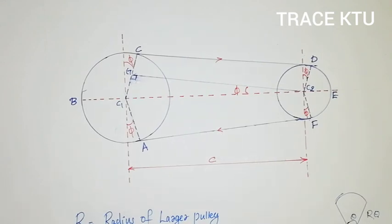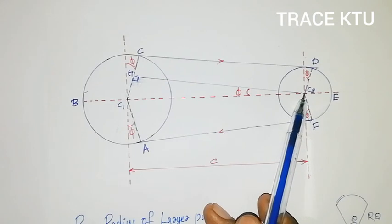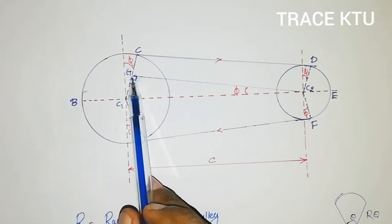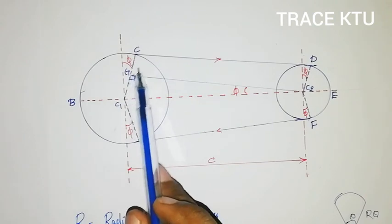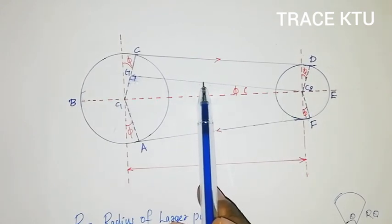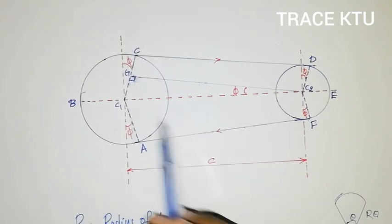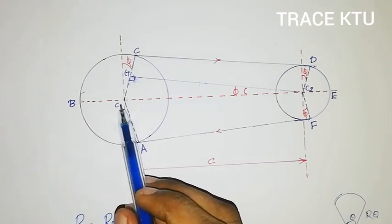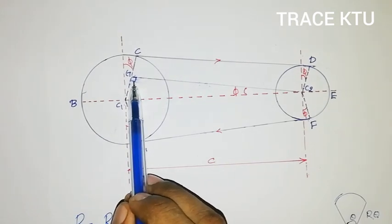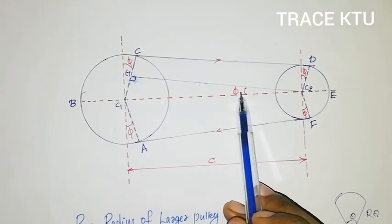Now, here we draw a perpendicular from the center of the smaller pulley C2 to the tangent line. This forms a right angle — 90 degrees. So in triangle C1-C2-G, the angle at G is 90 degrees. We will use this triangle to find the straight length C2G.